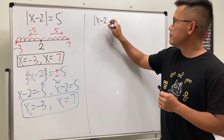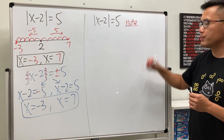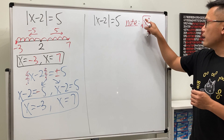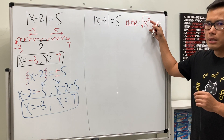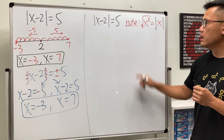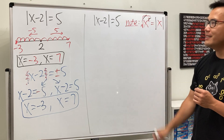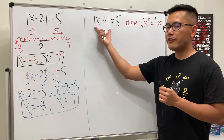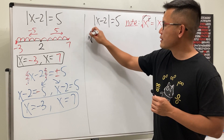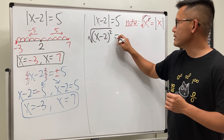For the equation |x - 2| = 5, here's a key note: when we have √(x²), we can cancel the square root and the square, but the result is not just x — it's actually the absolute value of x. That's because the output of a square root must be positive. We'll use this idea backwards: rewrite the absolute value as a square root, so |x - 2| becomes √((x-2)²), and set that equal to 5.